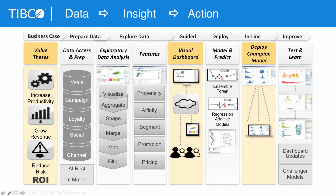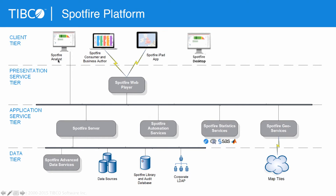We'll show you how to take the next step of modeling some of the key variables that drive value and then deploy those models into inline systems. The platform includes a client tier. Spotfire Analyst is where we'll be working primarily today. We also have a consumer and business author, a desktop, and an iPad app. Some of these web components are sourced through the web player server, and the Spotfire server manages the backend components, connecting into the library where you manage your templates, information links to data sources, and scripts of any nature, especially including TIBCO-R types of scripts.